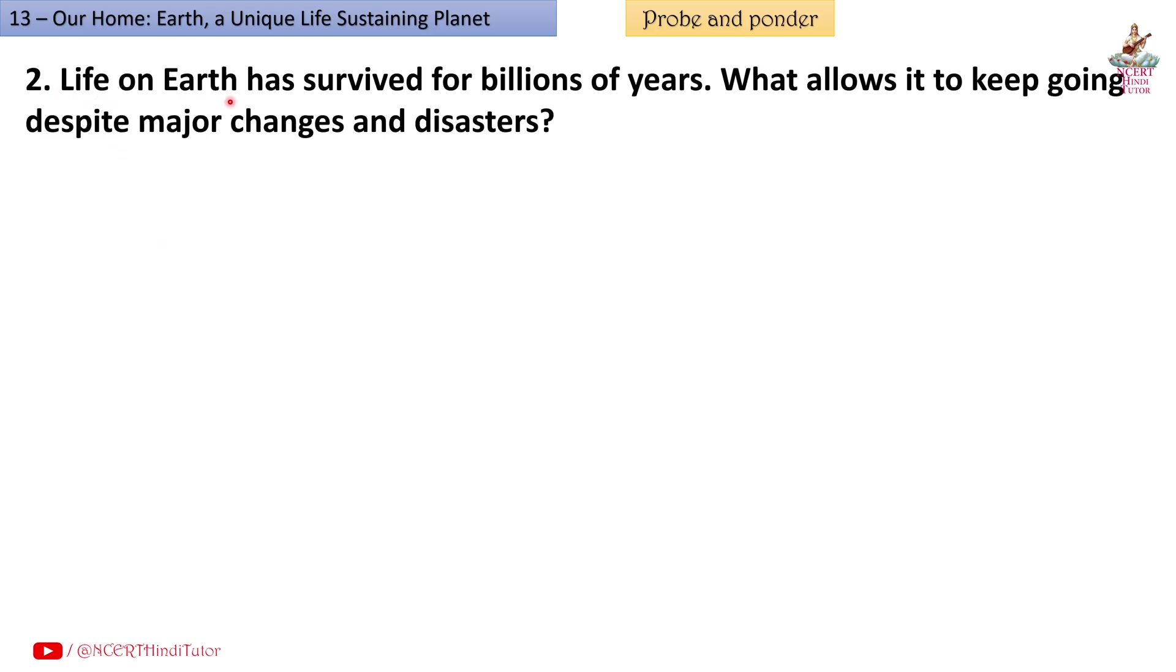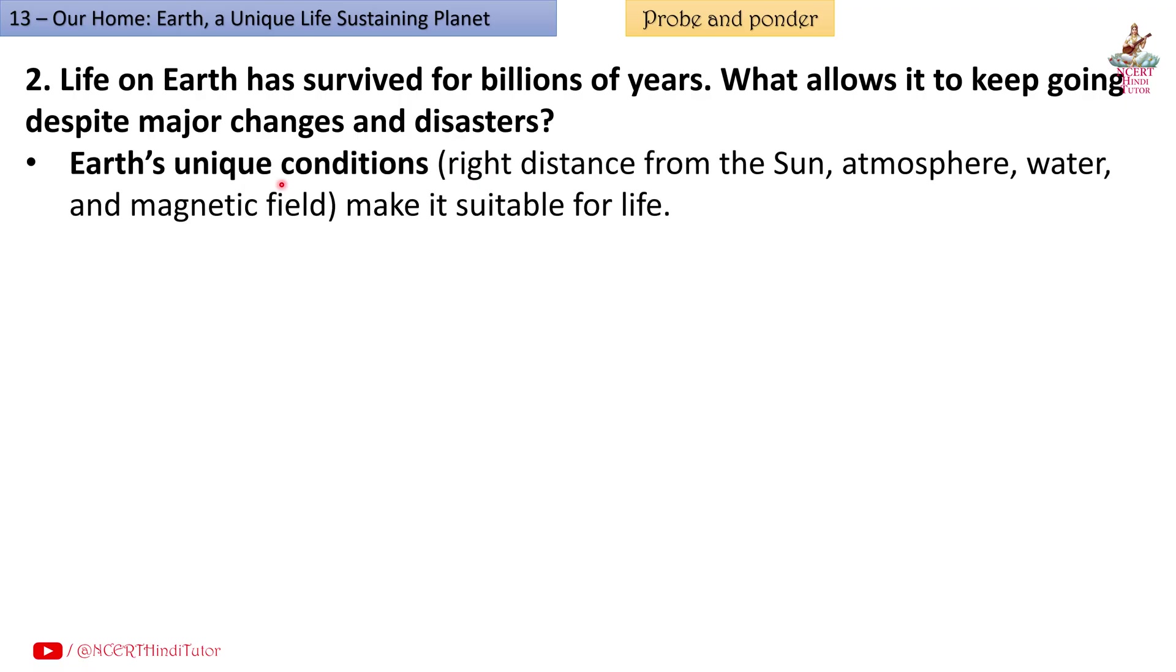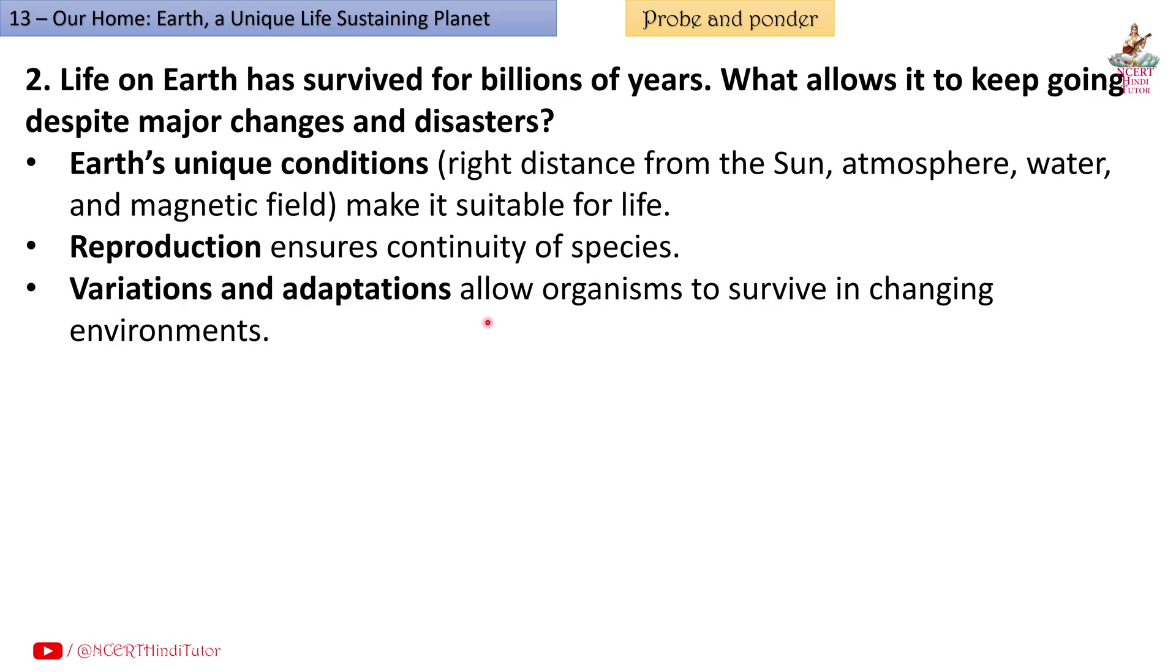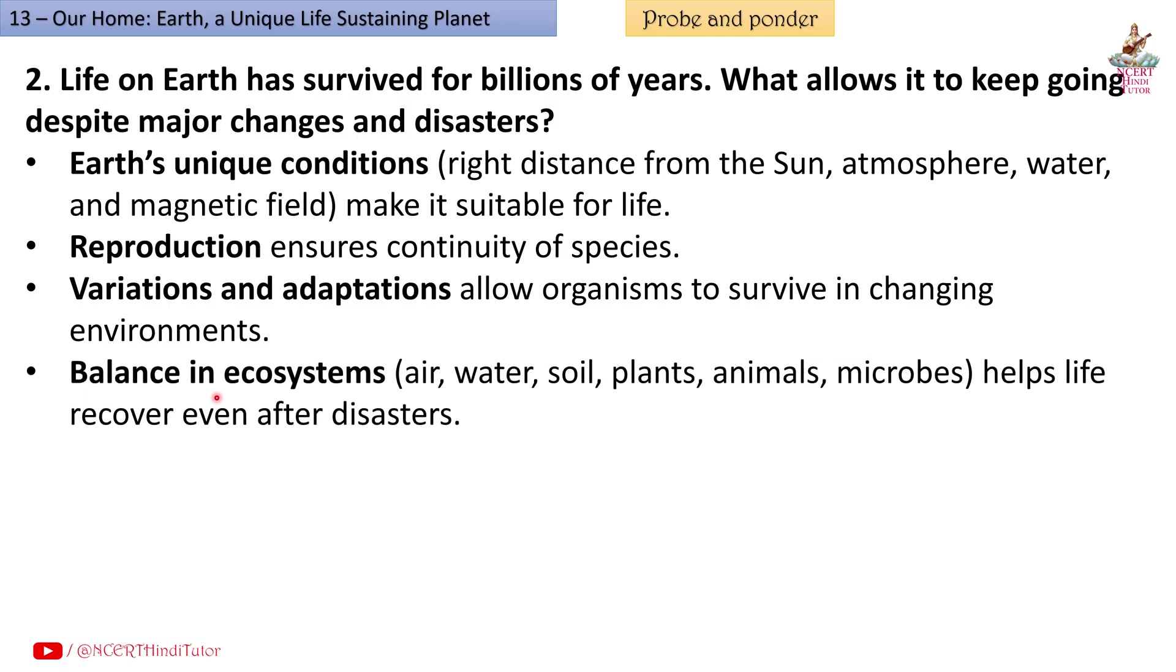Question 2: Life on Earth has survived for billions of years. What allows it to keep going despite major changes and disasters? Answer: Earth's unique conditions - right distance from the sun, atmosphere, water and magnetic field - make it suitable for life. Reproduction ensures continuity of species. Variations and adaptations allow organisms to survive in changing environments. Balance in ecosystems - air, water, soil, plants, animals, microbes - helps life recover even after disasters.